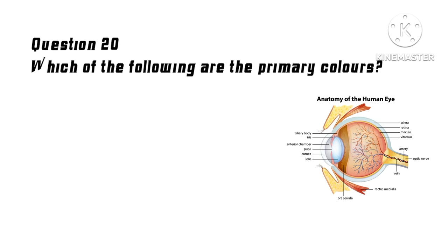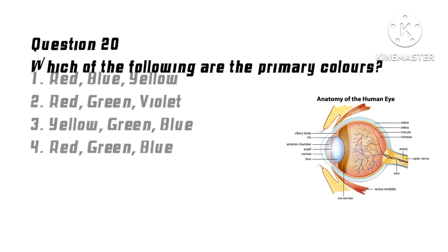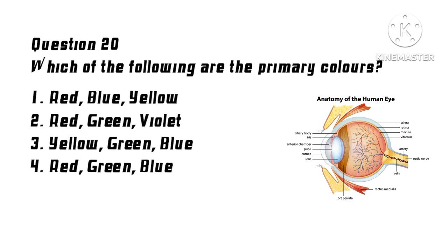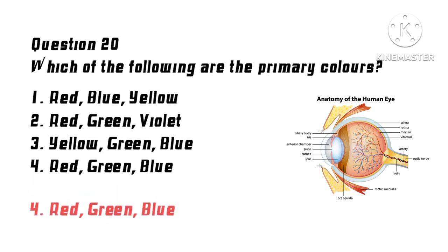Question 20: Which of the following are the primary colors? Options: 1. Red, Blue, Yellow, 2. Red, Green, Violet, 3. Yellow, Green, Blue, 4. Red, Green, Blue. Correct answer: 4. Red, Green, Blue.